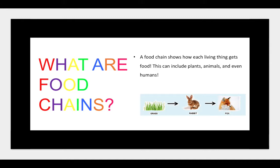Here is a common example of a food chain. The grass produces its own food and it gets eaten by rabbits, which are also eaten by foxes. The arrows are pointing in the direction the energy and nutrients are travelling. So these arrows are not meaning what eats what — the grass is obviously not eating the rabbit. It's the other way around: the fox is eating the rabbit, which is eating the grass.